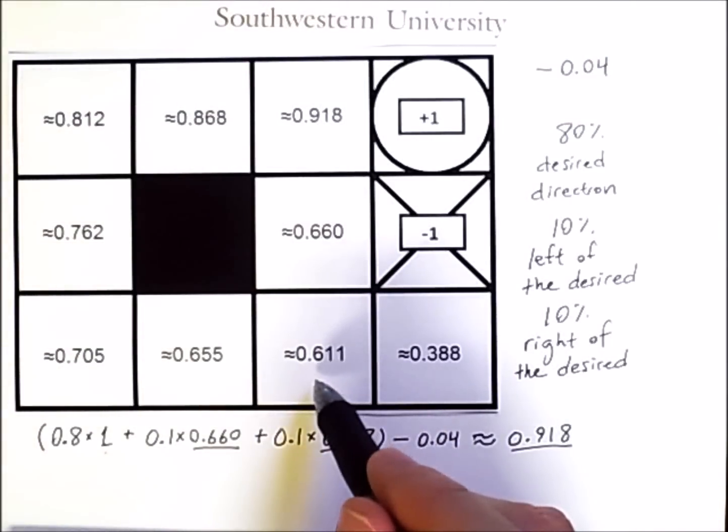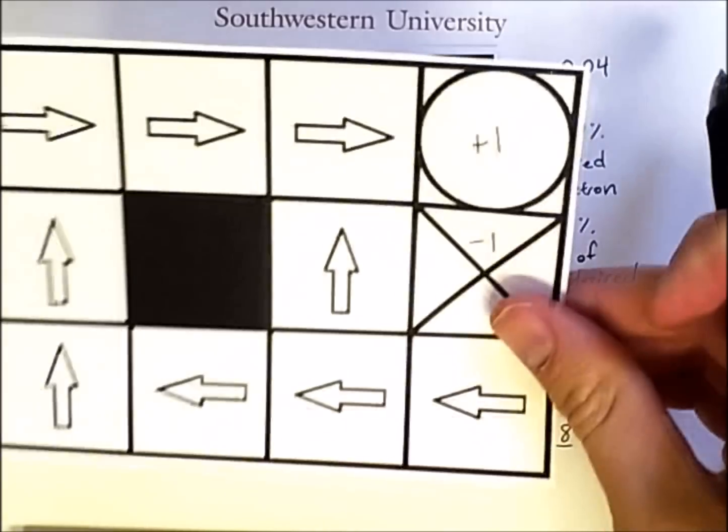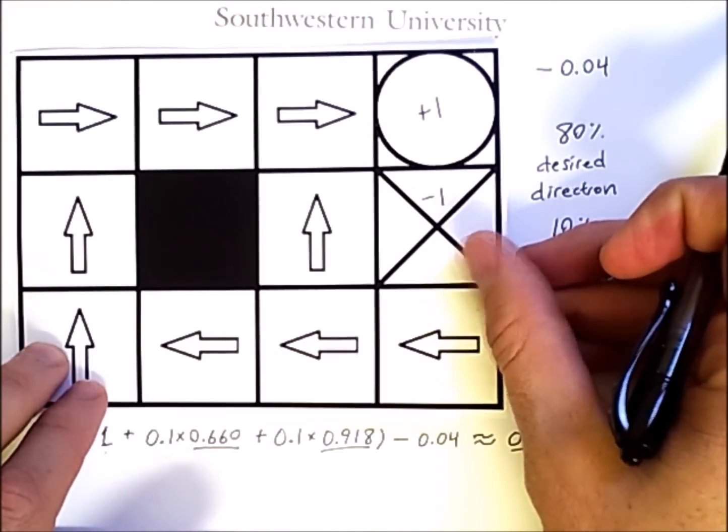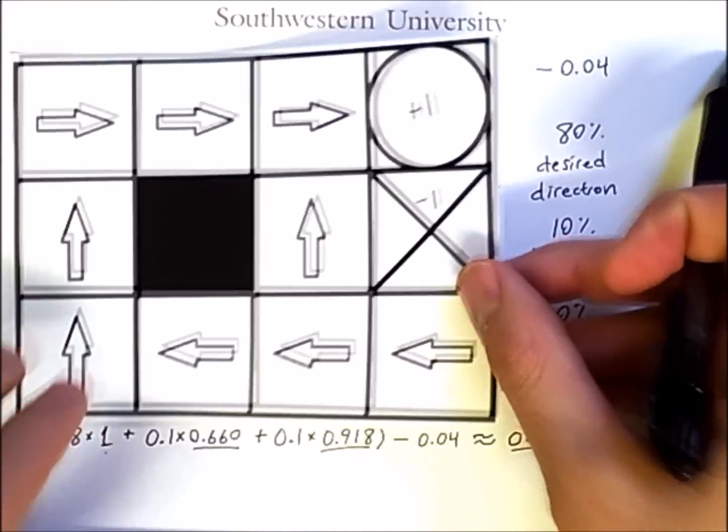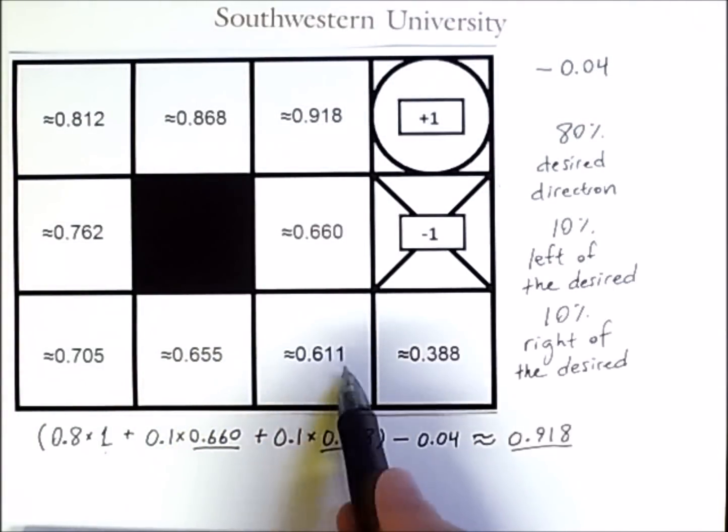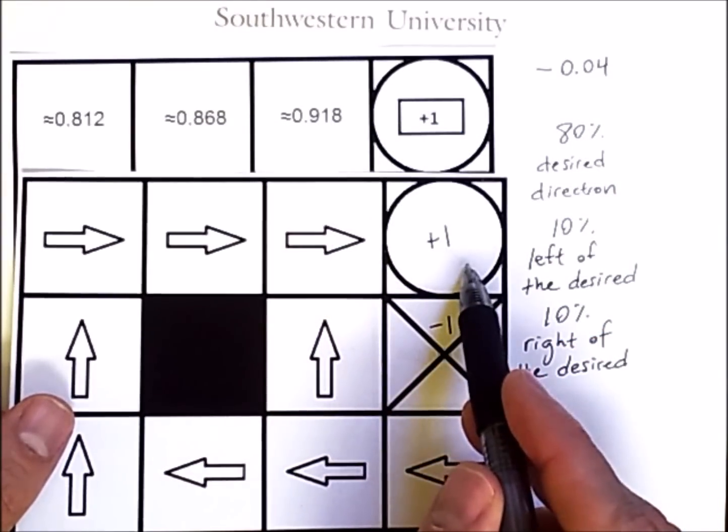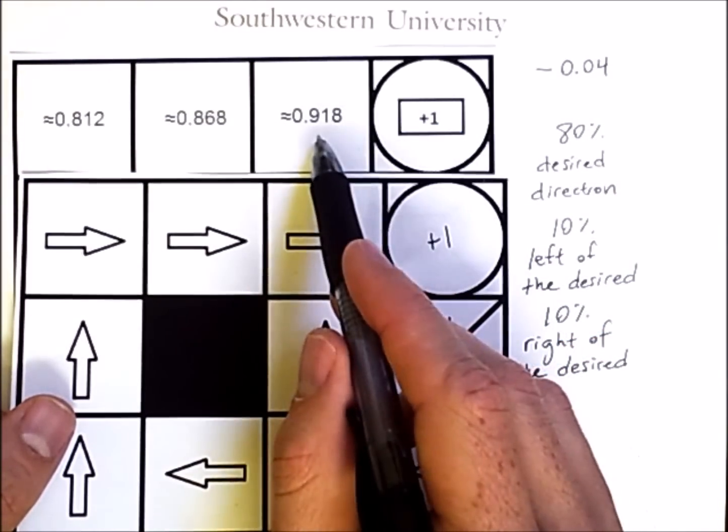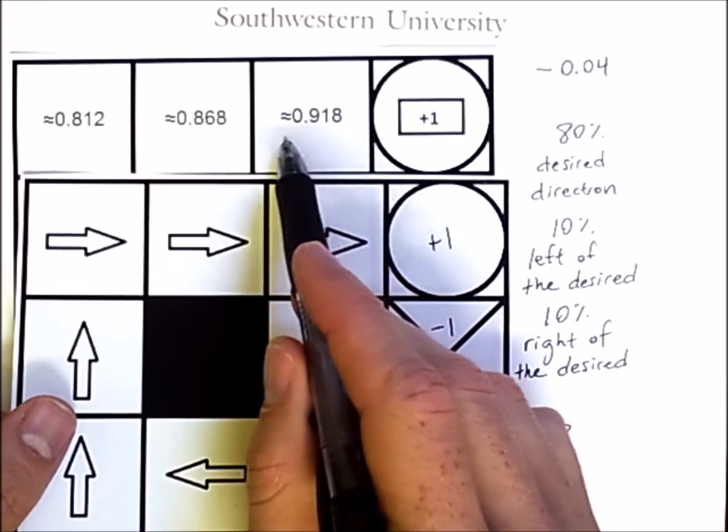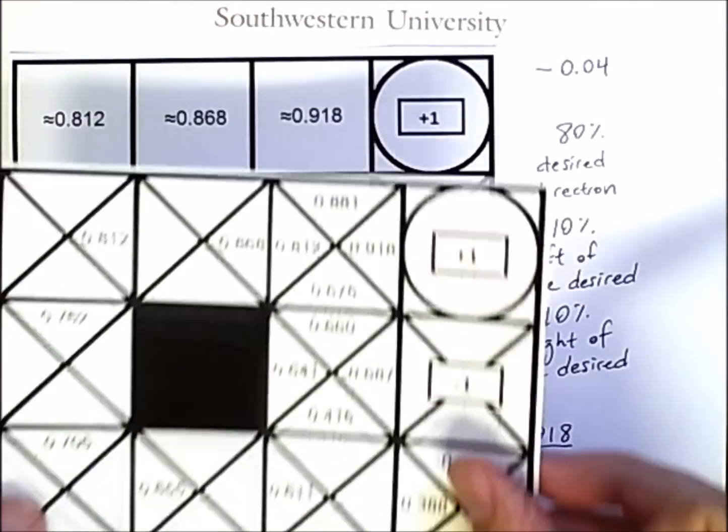What we're seeing here are the state values. So the reason that the value in this state is 0.611 is that it assumes we will follow this policy. Another way of thinking of that is that the value of moving left in this state is that value. Similarly, looking back at the policy here, in this state we're moving to the right. So the value of moving right in this state is 0.918. We can make that more explicit with a diagram that looks like this.